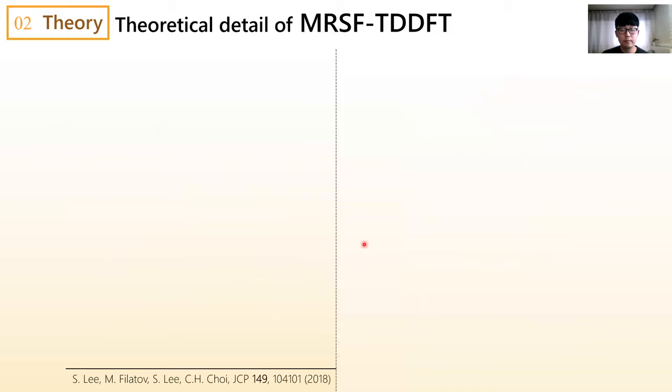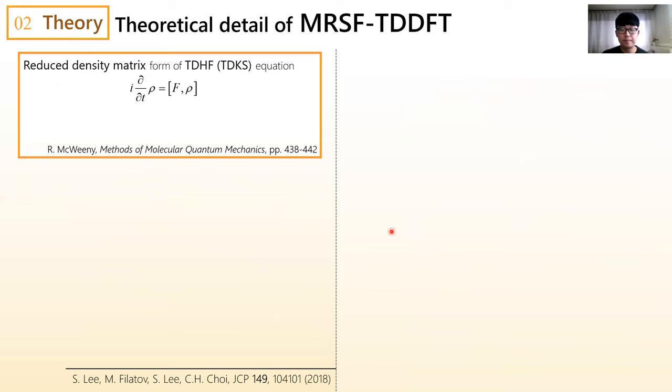Then, one remaining question would be, how the Casida equation of MRSF-TDDFT can be derived from the time-dependent Kohn-Sham equation. There are several ways to derive Casida equation. MRSF-TDDFT is derived from the reduced density matrix form of time-dependent Kohn-Sham equation. In this approach, the most important condition is idempotent density matrix as well as idempotent density matrix of reference state. Since a reduced density matrix of mixed state is not idempotent, it was difficult to mix two different references satisfying the idempotent relation.